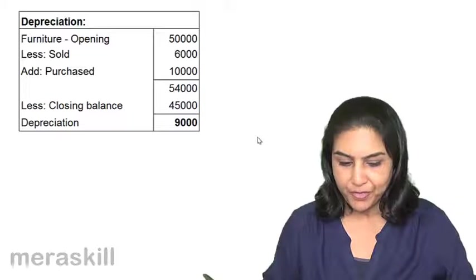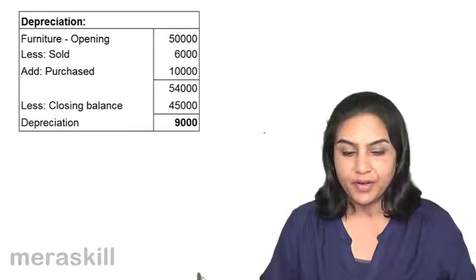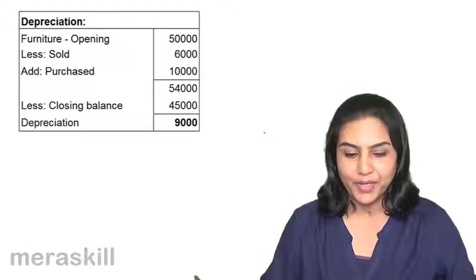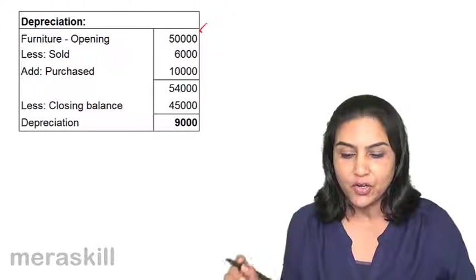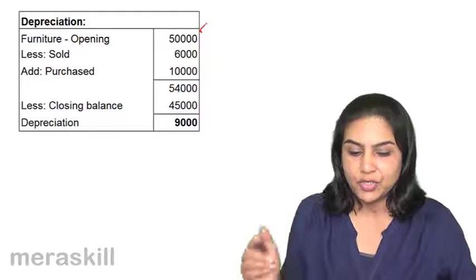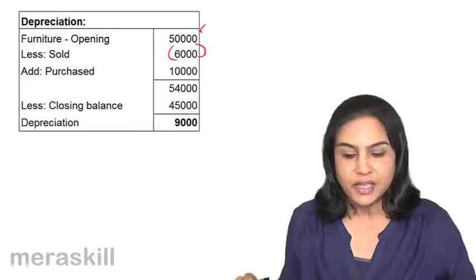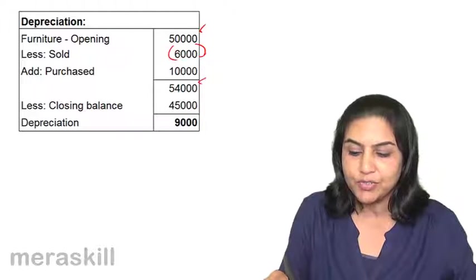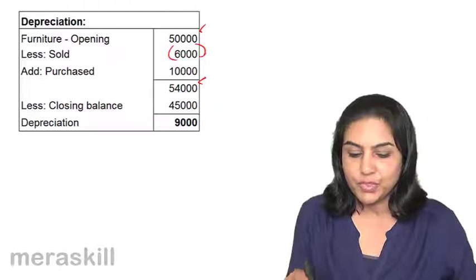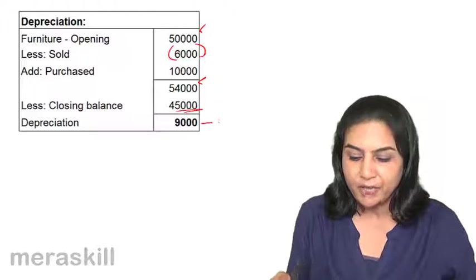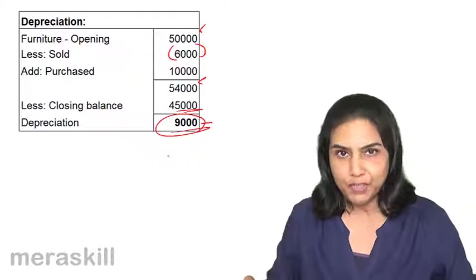Let us also look at the working for depreciation. Either we prepare a furniture account and find out the balancing figure, or logically: opening balance of furniture was 50,000; sold — so 6,000 went out; purchased — 10,000 came in; net is 54,000. But closing balance given in the books is 45,000. Therefore the difference must have been depreciation of 9,000. That is what we took as depreciation.